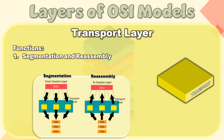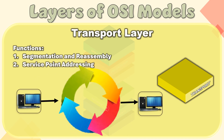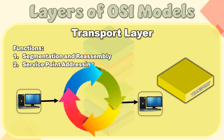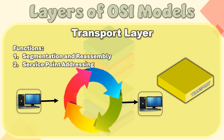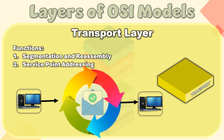Functions of the Transport Layer. Segmentation and Reassembly: This layer accepts the message from the session layer and breaks the message into smaller units. Each of the segments produced has a header associated with it. The transport layer at the destination station reassembles the message. Service Point Addressing: To deliver the message to the correct process, the transport layer header includes a type of address called Service Point Address or Port Address. By specifying this address, the transport layer makes sure that the message is delivered to the correct process.